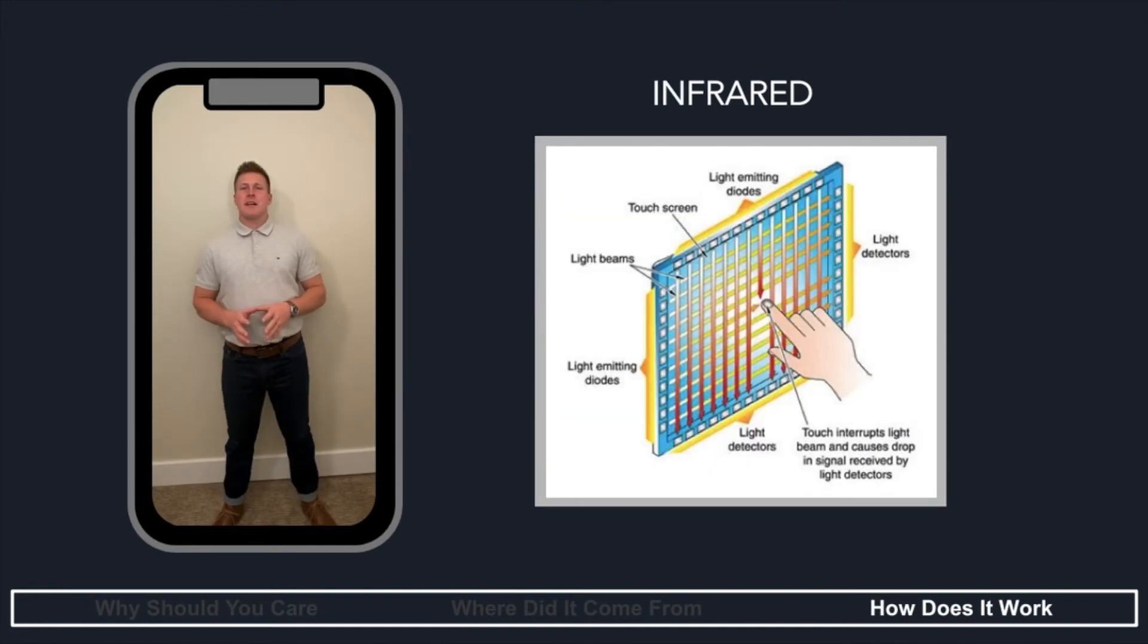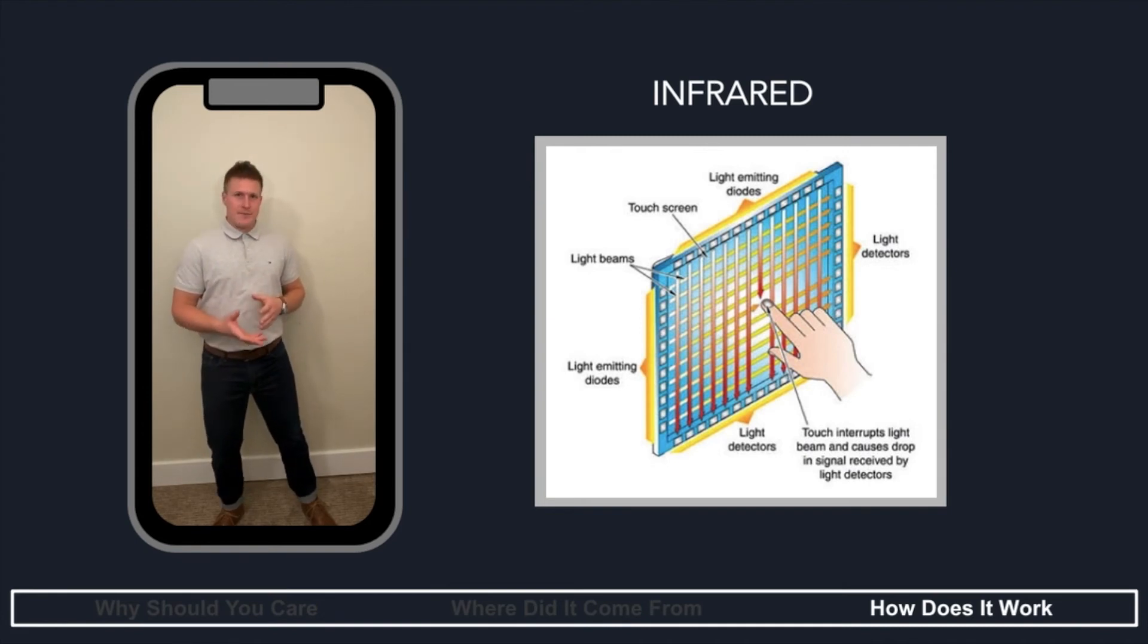Last, we have infrared touchscreen technology, or IR. So infrared touchscreens have a perimeter of LEDs, or light-emitting diodes, as well as sensors or photodetectors. These are constantly emitting and receiving light in a grid formation across the touchscreen. Then when you put your finger on the touchscreen, it interrupts that light, and the touchscreen is able to detect where the light is being interrupted and knows that's where it's being touched on the screen.